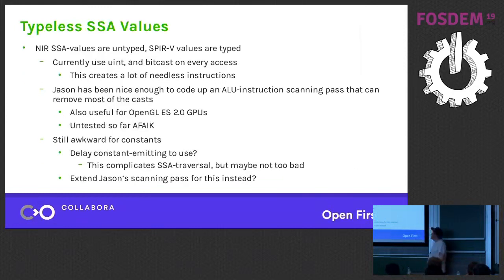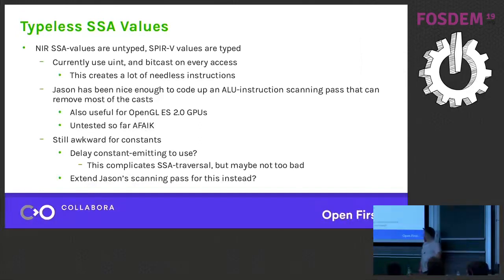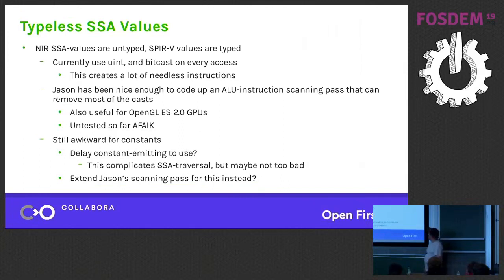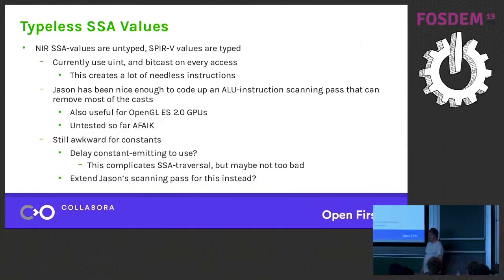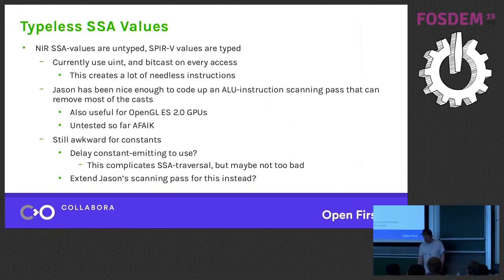Another problem is that SSA values in NIR are typeless — they're basically just a bucket of bits — which means we currently just bit-cast everything into and from uint. This creates a lot of needless instructions in many cases. Jason Ekstrand of Intel has been nice enough to create a prototype for a scanning pass that finds which casts can be removed and replaces the different SSA values with typed versions. It doesn't work for all cases but it doesn't need to — it only needs to do better than nothing. Some constants are still problematic, but I can probably extend it. I haven't tested this pass yet because of time restrictions.